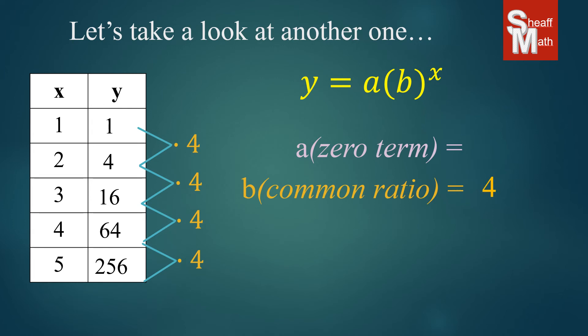What we're going to do to find our zero term is just extend our table up top. To find the number before this, if everything is being multiplied by 4, then we would do the reverse, which is divide by 4, and 1 divided by 4 is 0.25, which is our zero term. We put those into our equation and have our final answer.